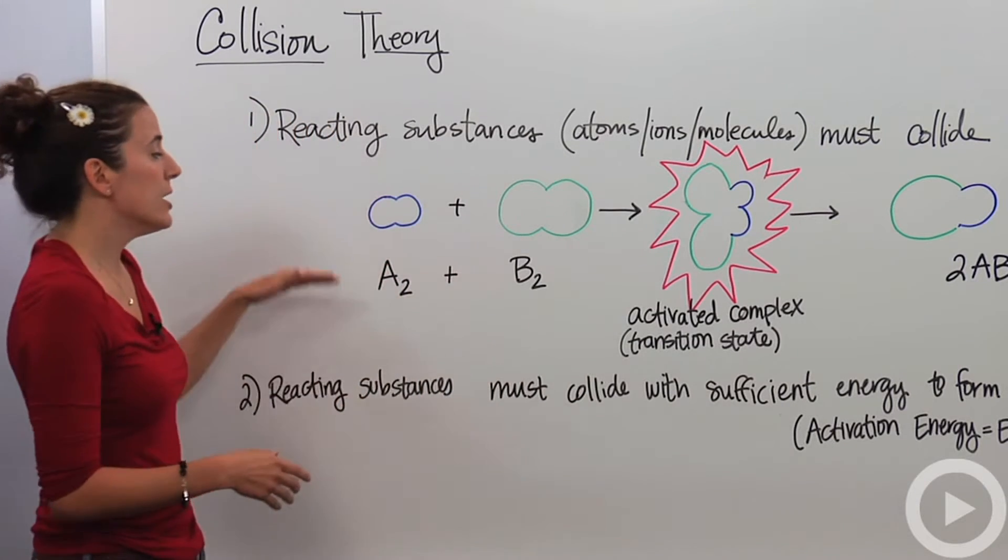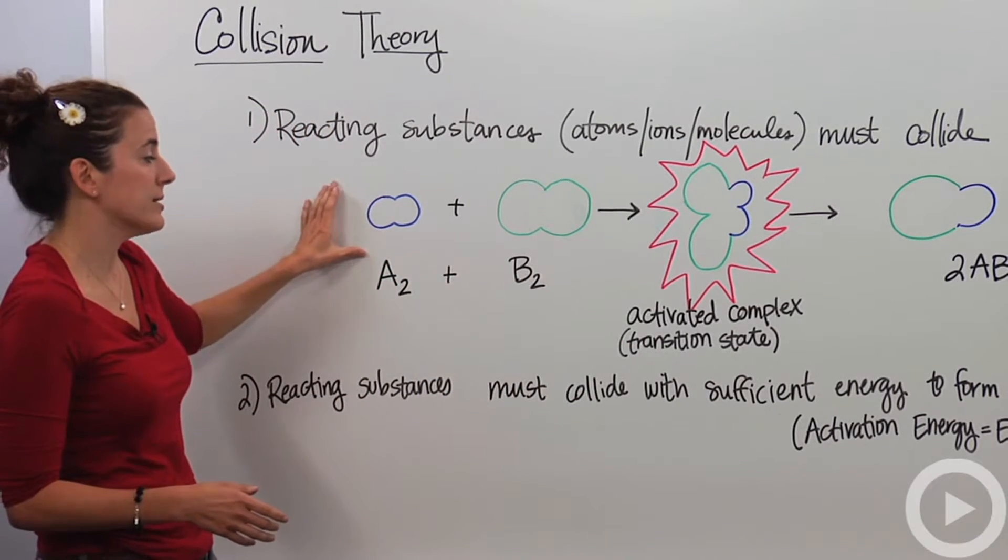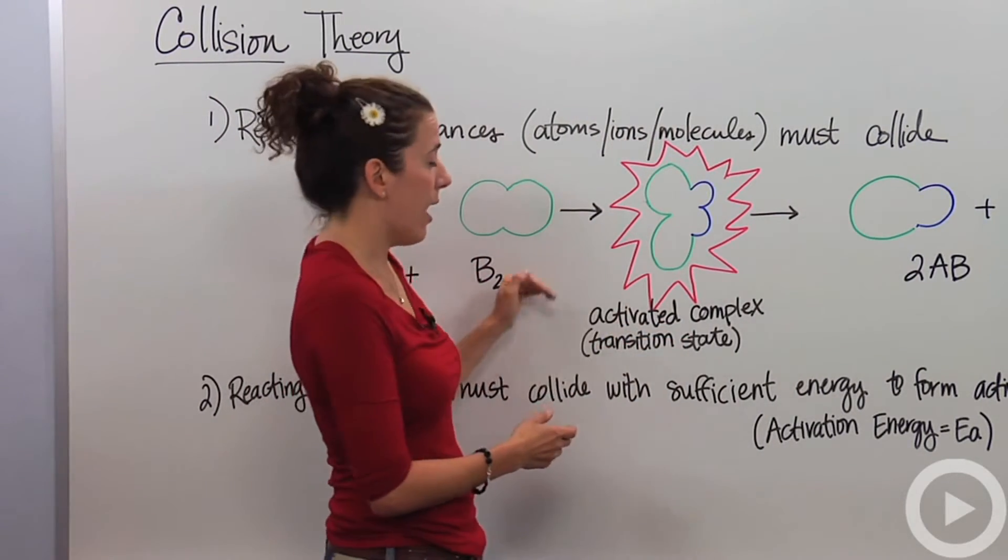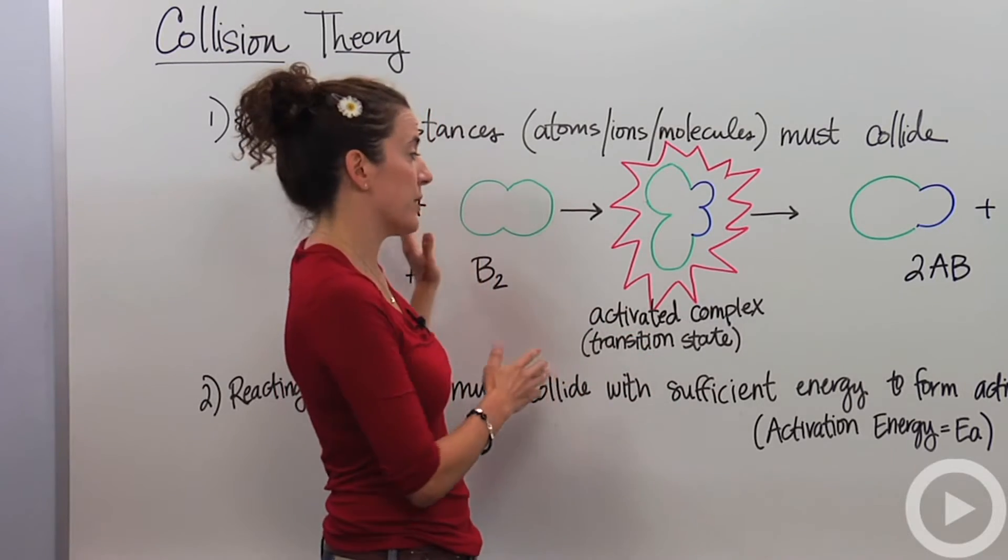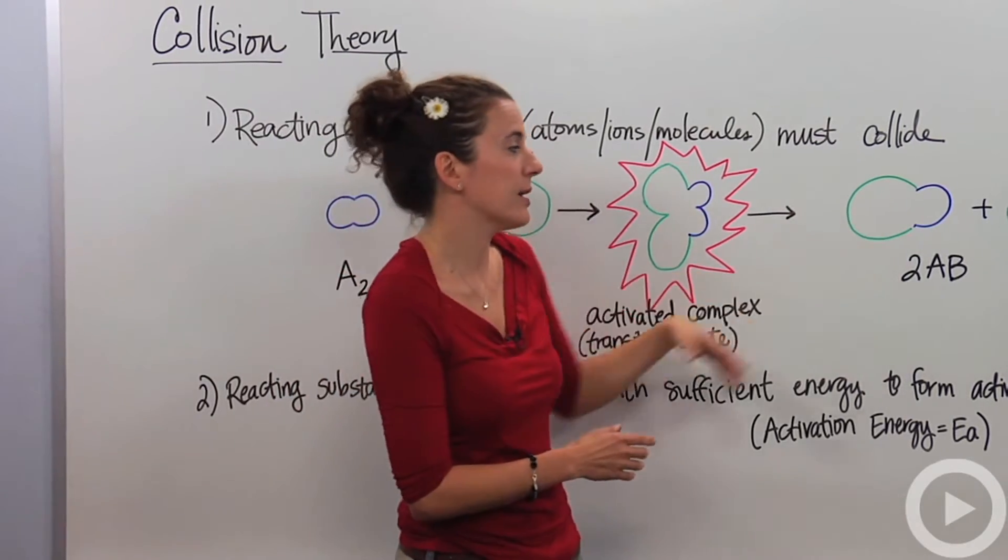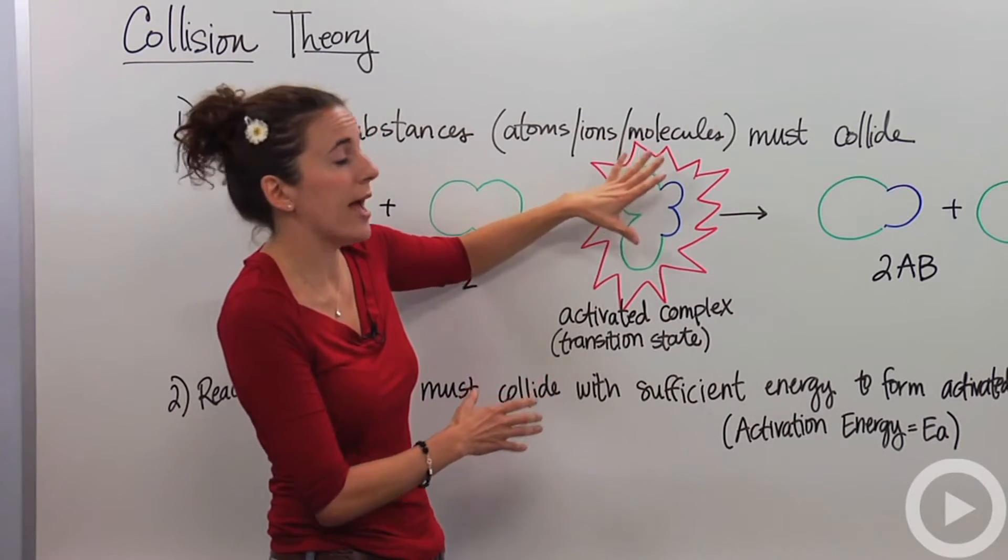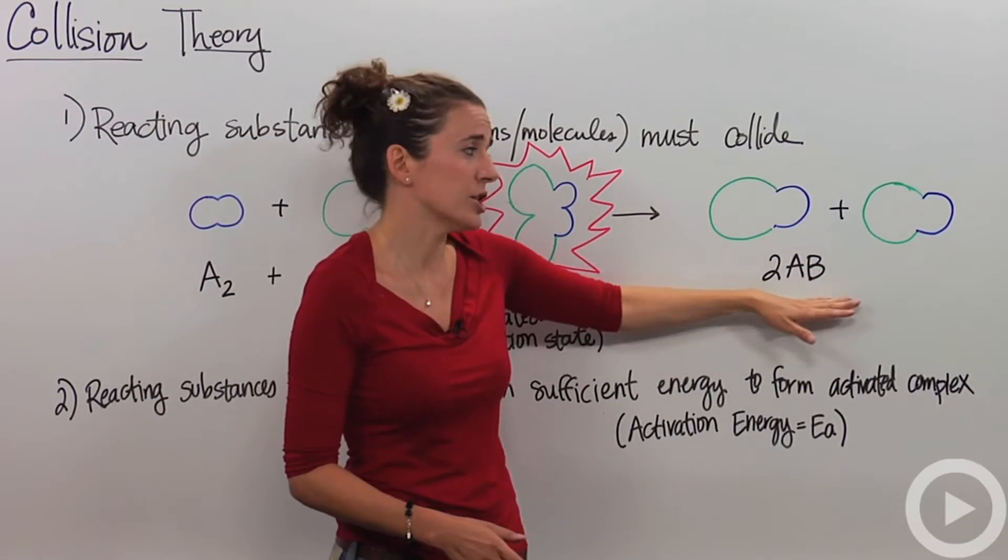That seems pretty obvious. So we have our two reactants, A and B, and they must collide. This is what we're going to call our activated complex, or our transition state, transitioning from the reactants towards our products. It's going to create this independent, very high energy activated complex, and then yield our products, our 2AB.